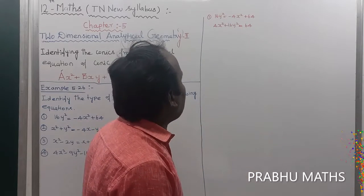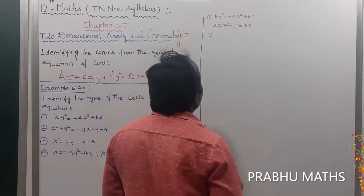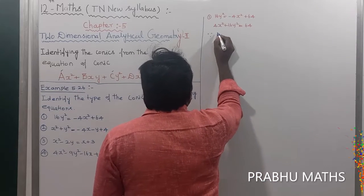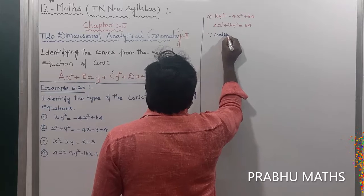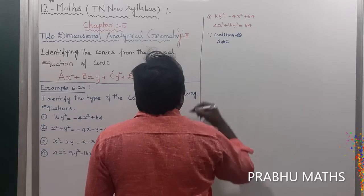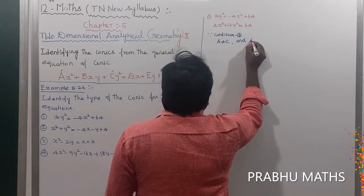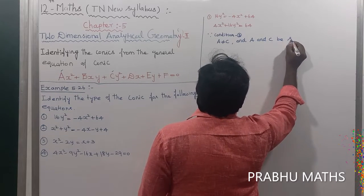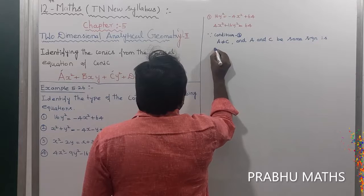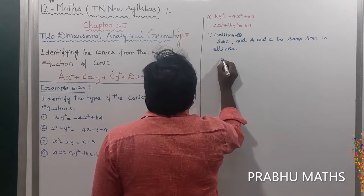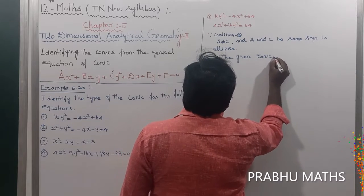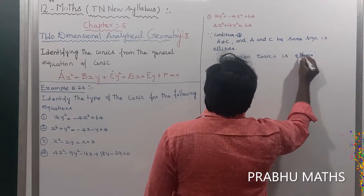The condition here involves a and c. Since a is not equal to c but both have the same sign, this satisfies condition number 3. When a ≠ c and the coefficients share the same sign, the conic is called an ellipse. Therefore, the given conic is an ellipse.